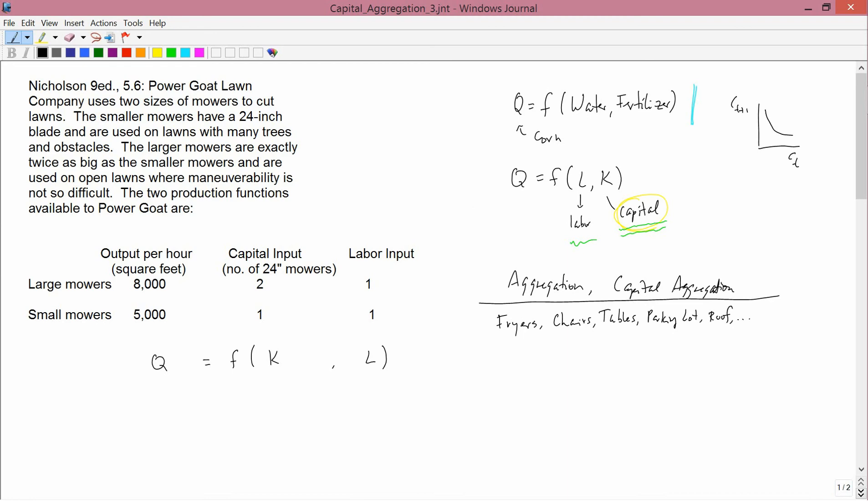So there are many different kinds of capital goods that are used in the restaurant. Now, if you wanted to get a measure of one number for how much capital is used in the restaurant,